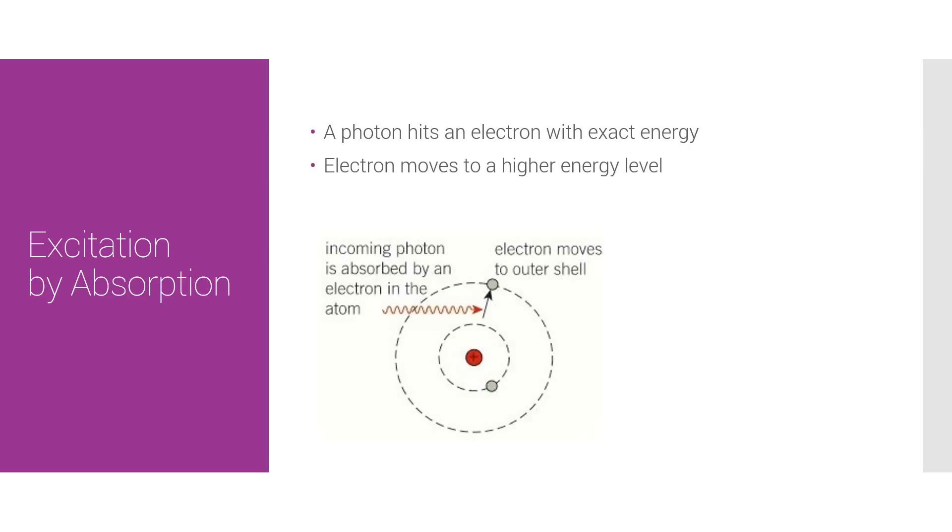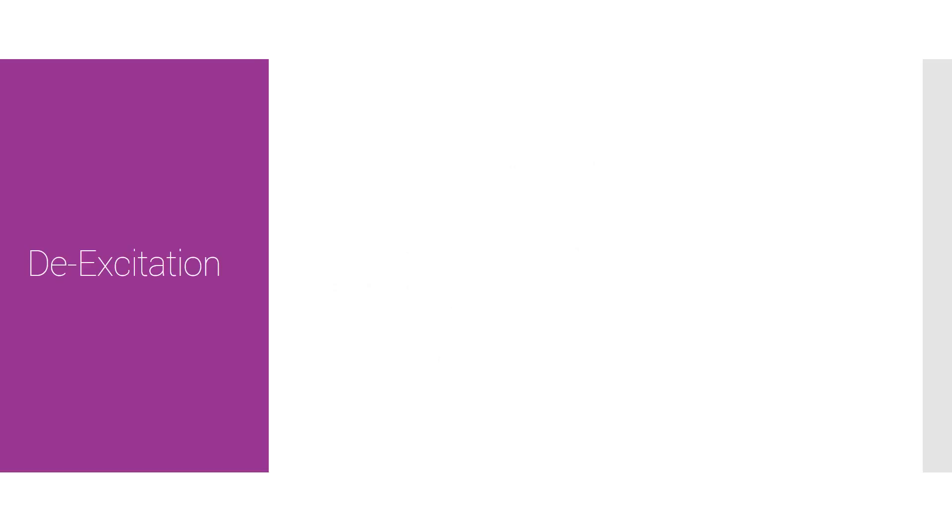But then, of course, we have de-excitation. Now this is pretty cool. This is obviously the exact opposite of excitation, an electron drops down from an energy level and emits a photon of equal energy difference to however much it's dropped down by.